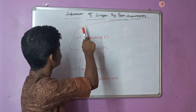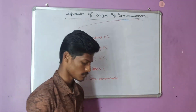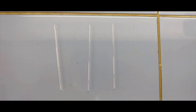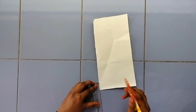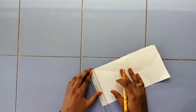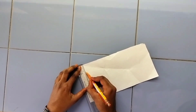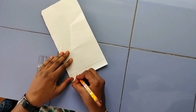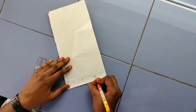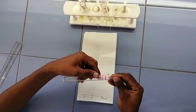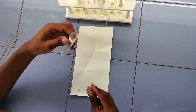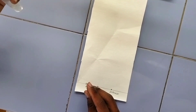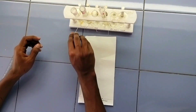Now let us see how to perform the separation of sugar by paper chromatography method. The requirements needed are: a chromatography chamber with thread, Whatman's paper, three capillary tubes, and three different types of sugar solution. Draw a line with a pencil along the width of the paper about 1.5 to 2 centimeters from the bottom. Along this line, place three spots at equal distances. Use a fine capillary tube to place drops of sugar solution on three different spots — two known sugar solutions and one unknown sugar sample.